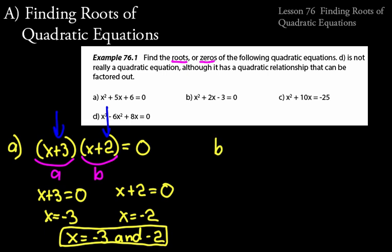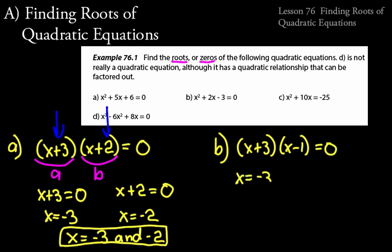Let's move on to B. We factor x squared plus 2x minus 3 into two binomials: x plus 3 times x minus 1 equals zero. Thinking about it mentally: for x plus 3, the opposite of positive 3 is negative 3, so negative 3 is one of the roots. For x minus 1, we'd need a positive 1 to make that binomial zero. So our two zeros or roots are x equals negative 3 and x equals positive 1.